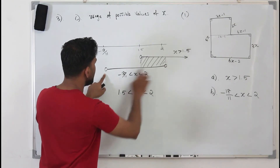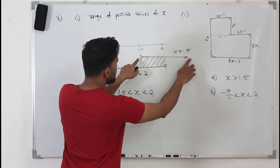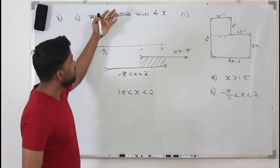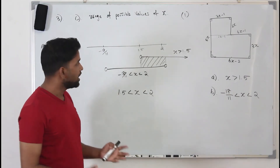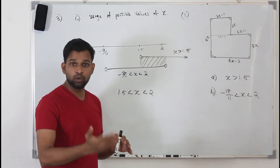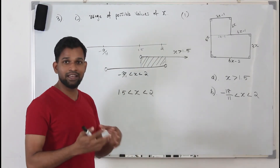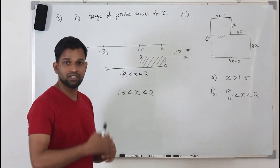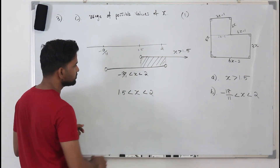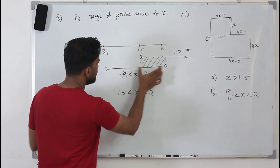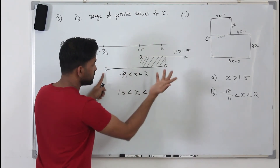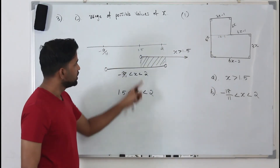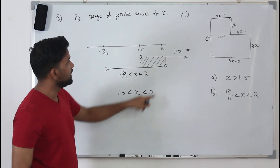The common region — the intersection of both sets — is 1.5 less than x less than 2. Any value below 1.5 is not in the Part A solution, and any value above 2 is not in the Part B solution. So the range of possible values of x is 1.5 less than x less than 2. Combining the two inequalities correctly gives you the final answer, worth 1 mark.